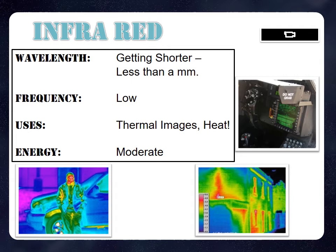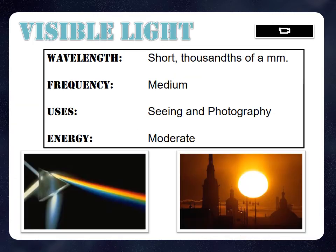Visible light is what we can see with. The wavelengths are short — about a thousandth of a millimeter — and medium frequency. It's used for photography and, of course, to be able to see things. It's in the moderate energy range.